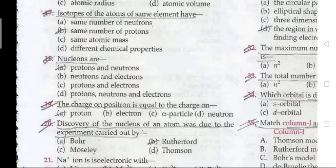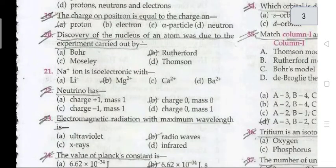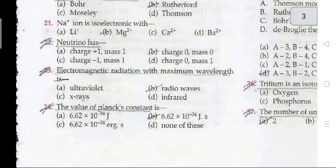Question 21: Na⁺ ion is isoelectronic with Mg²⁺. Neutron has charge zero and mass zero. Question 23: electromagnetic radiation with maximum wavelength is radio waves.